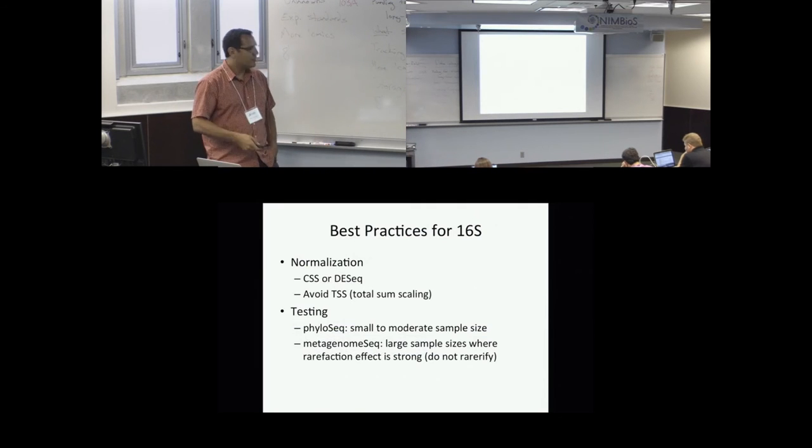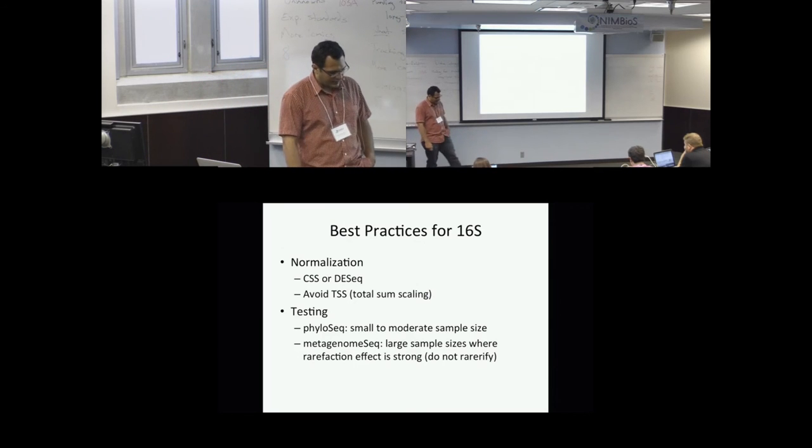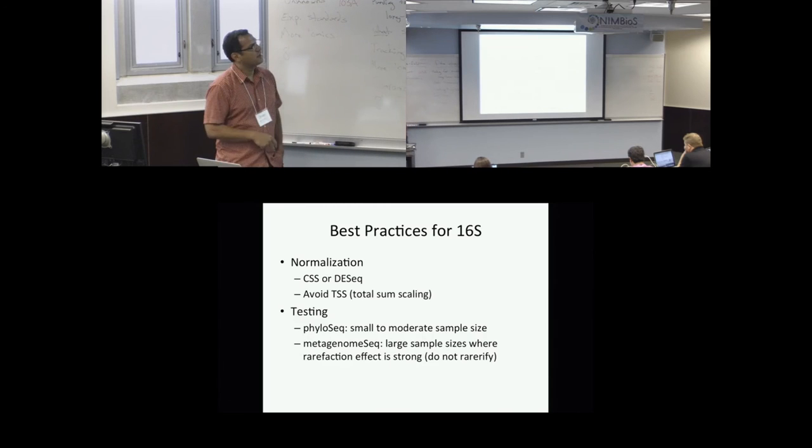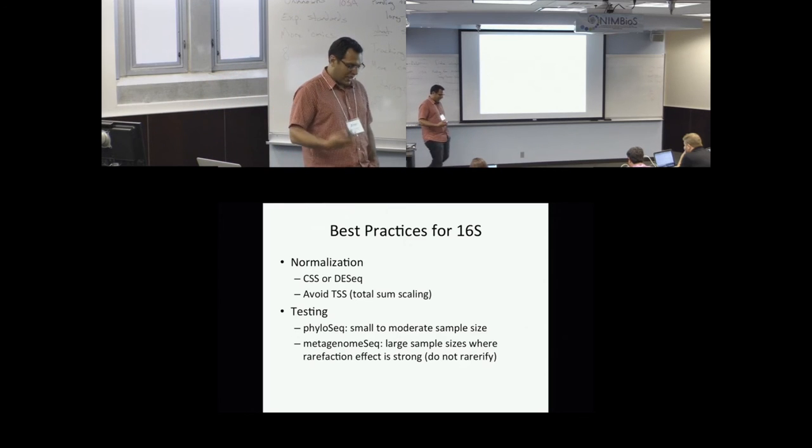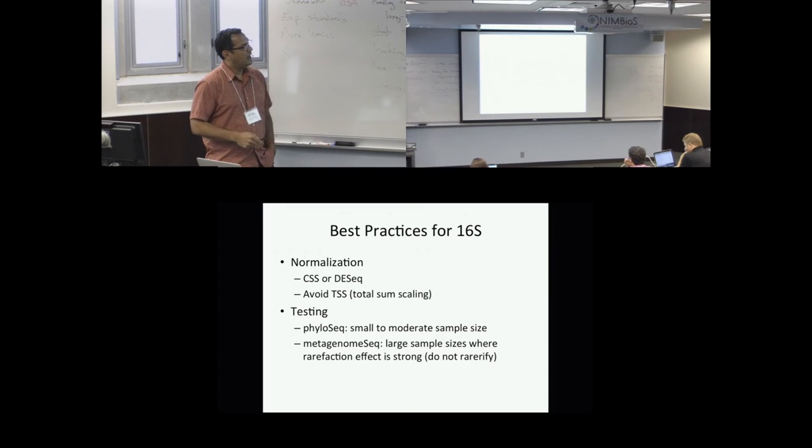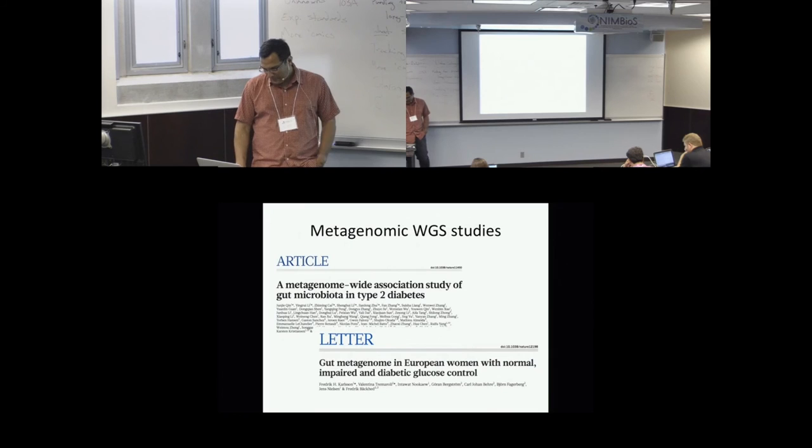From this study, I would say that the best practices that we've learned for 16S analysis is in terms of normalization. Avoid total sum scaling, and I'll give you another example of that for whole metagenome sequencing. DESeq or our own CSS, which I'll describe shortly, tend to do a little bit better. In terms of testing, PhyloSeq is another R Bioconductor package which works very well for small to moderate sample size where rarefaction effects are not that large or that strong. I would recommend that we try our package when you have fairly large heterogeneous samples and where rarefaction effects are strong.